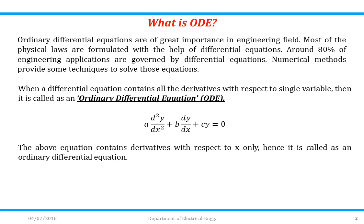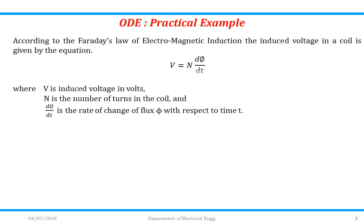For example, α·d²y/dx² + b·dy/dx + cy = 0 is an example of an ordinary differential equation. The above equation contains derivatives with respect to x only, hence it is called an ordinary differential equation. According to Faraday's law of electromagnetic induction, the induced voltage in a coil is given by v = N·dφ/dt, where v is the induced voltage in volts, N is the number of turns in the coil, and dφ/dt is the rate of change of flux φ with respect to time t. So this equation is also an example of an ordinary differential equation.